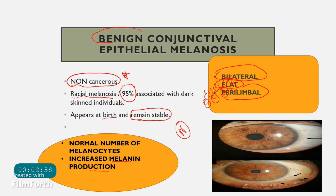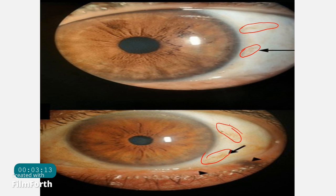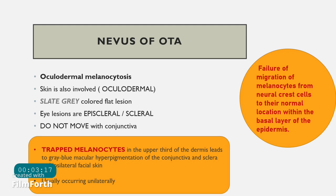Looking at these pictures, you can see the lesions are present in both eyes as brownish, flat, bilateral lesions present around the limbus. This is racial melanosis.